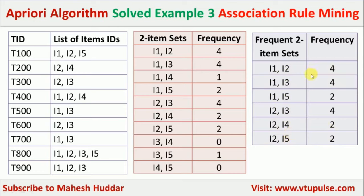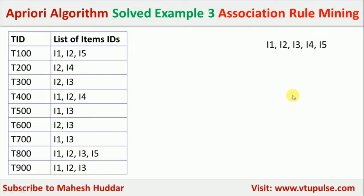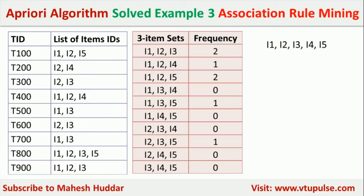The next step is to identify three-itemsets. The unique items in the frequent two-itemsets are I1, I2, I3, I4, and I5. From these five items, we generate all three-item combinations: I1-I2-I3, I1-I2-I4, I1-I2-I5, I1-I3-I4, I1-I3-I5, I1-I4-I5, I2-I3-I4, I2-I3-I5, I2-I4-I5, and I3-I4-I5 — giving 10 total possibilities.